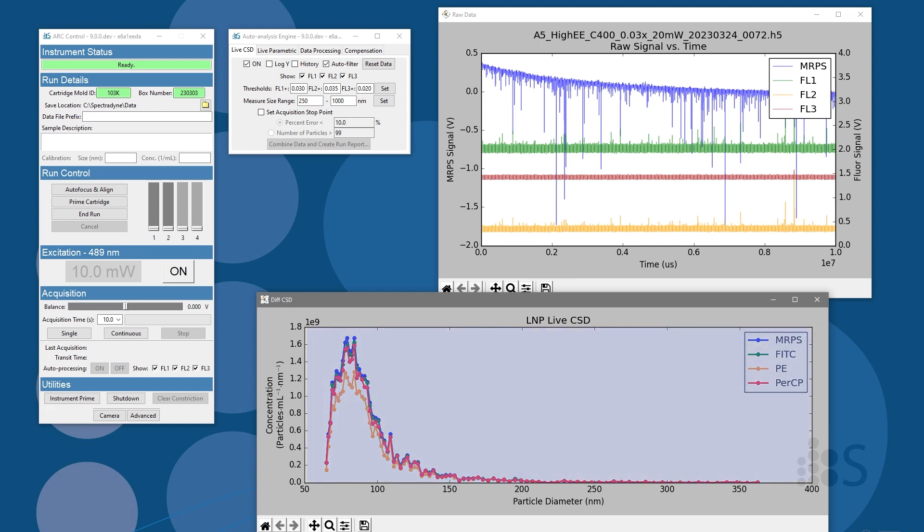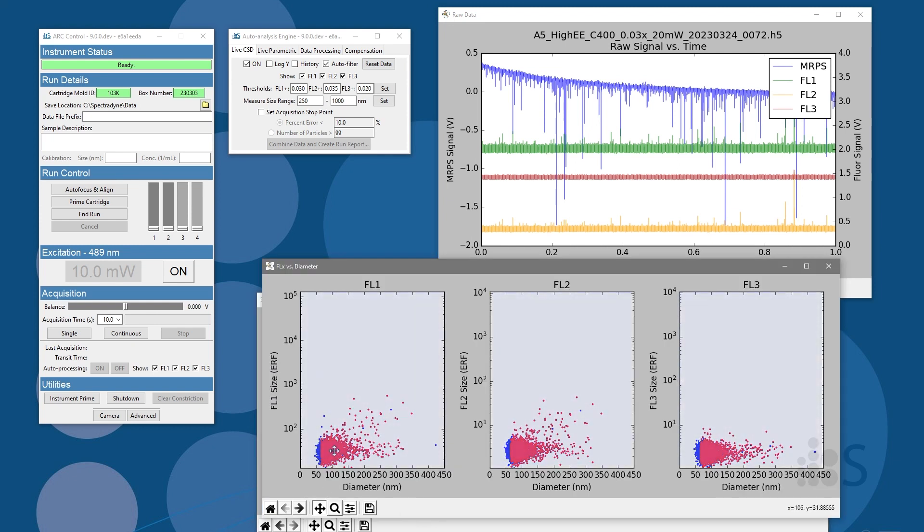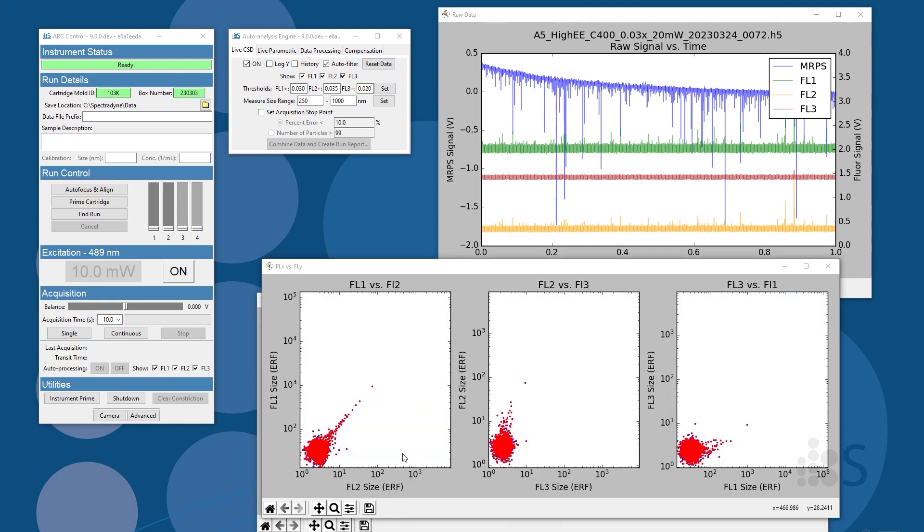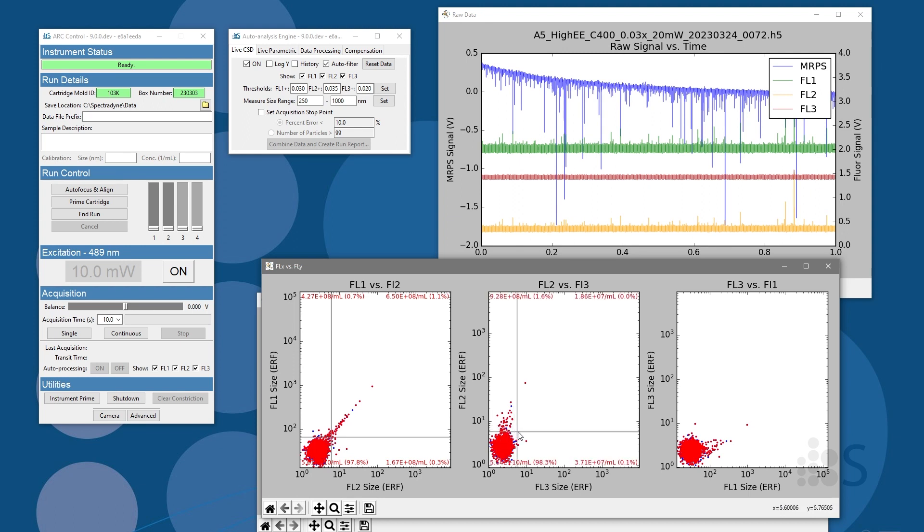This plot shows the size distribution of all particles and fluorescent subpopulations in the sample. These scatter plots show the brightness of each particle in each channel as a function of its size. The quadrant analysis tool allows us to dynamically isolate and measure the concentration of particles in a region of interest for each channel.